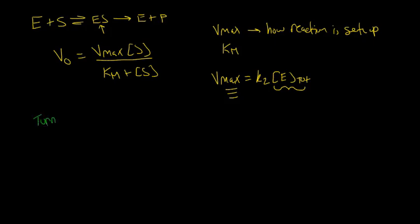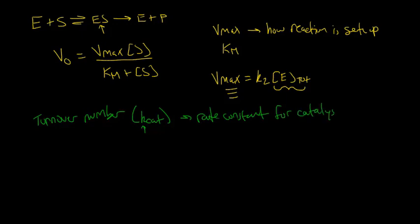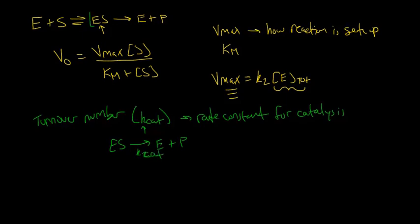The first one is called the turnover number, and we call this K_cat — the rate constant for catalysis. K_cat describes the conversion of our enzyme-substrate complex to enzyme plus products. As you'll note, this is the same as the second step in our enzyme kinetic model. In the past we've called this K2, but now we're calling it K_cat, so K2 equals K_cat.